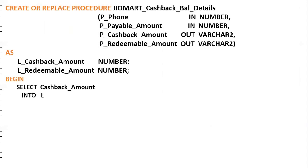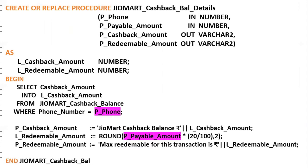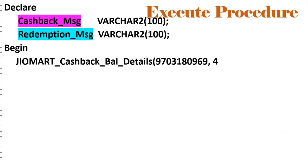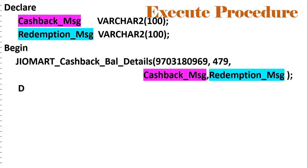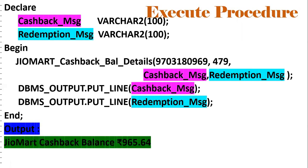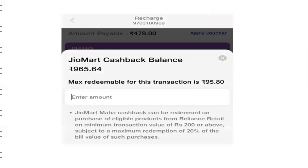We will see everything in a single process so that you can understand. Passing phone number and P_payable_amount — based on phone number, we get L_cashback_amount and concatenate with GeoMart cashback balance. Similarly, the payable amount is multiplied by 20% to get the redeemable amount. Now we need to execute this procedure using an anonymous block. Declaring local variables: cashback message and redemption message. This is our procedure name with input parameters phone number and payable amount, and output parameters cashback message and redemption message. For displaying, we use DBMS output. We get the output: GeoMart cashback balance is 965.64, maximum redeemable for this transaction is 95.80. This is the first use case.